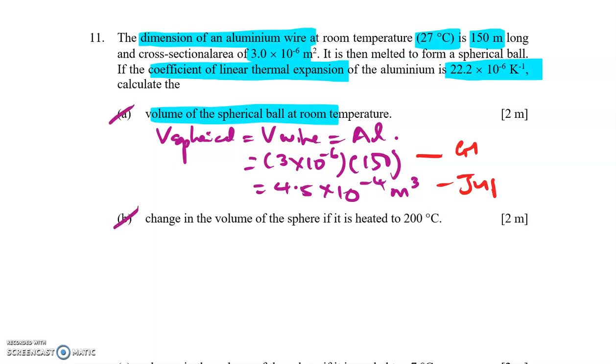Part B, change in volume. Kita tahu change in volume, delta V sama dengan gamma V_naught delta T. So here gamma is not given, but if we have the coefficient of linear expansion, which is alpha, gamma equal to 3 alpha.